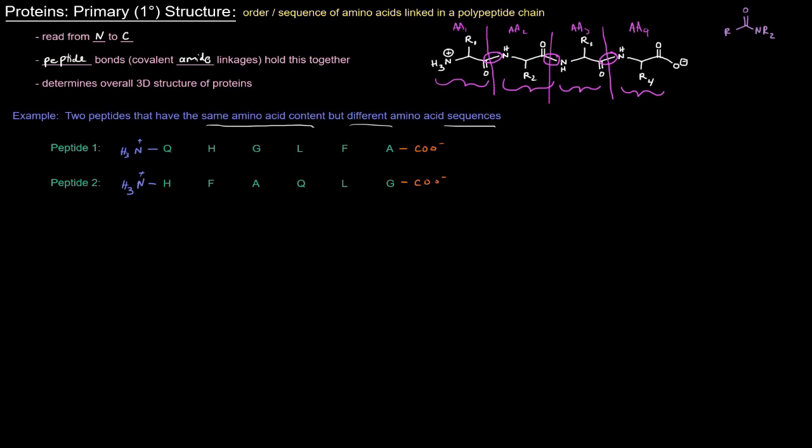And therefore, they would actually have different structures. The primary structure is what determines the overall 3D structure of the protein. The actual order of the amino acids plays a gigantic role in determining how that protein or how that polypeptide will fold into a protein. And obviously, this is a simple example with six amino acids here. But you could apply the same concept to much larger polypeptides. So you can have the same amino acid content, but different amino acid sequences, and you get entirely different proteins.